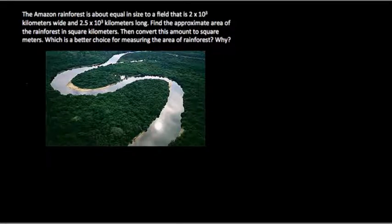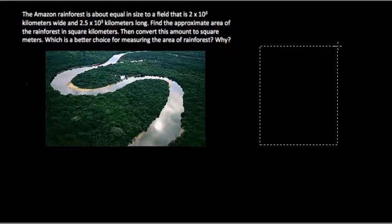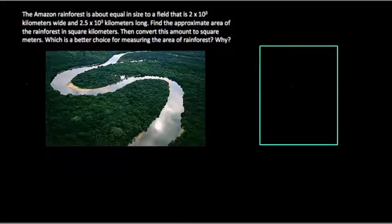Okay, so imagine that the Amazon is this wonderful and vast rainforest, certainly the largest on the planet. And if we look at it, what happens is that it is so large that we have this field, or we could draw this field, that's equal in size where our width, let's say, is 2 times 10 to the 3rd. And our height is 2.5 times 10 to the 3rd. So maybe something like that. And this would equal the area of the rainforest.